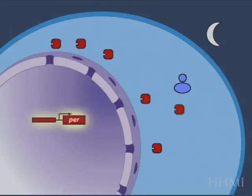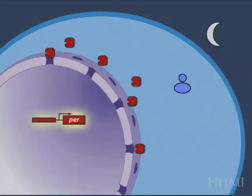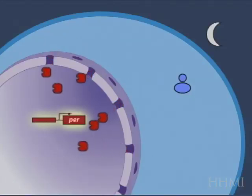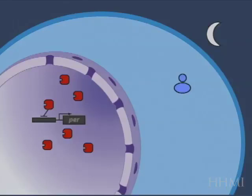RNA is made, protein is produced, and at some point in the middle of the night, there's enough protein which has been produced, and that protein migrates into the nucleus.